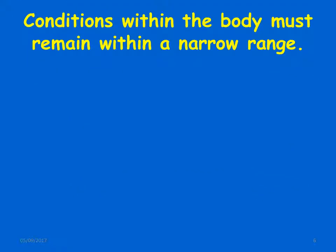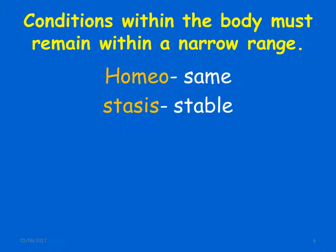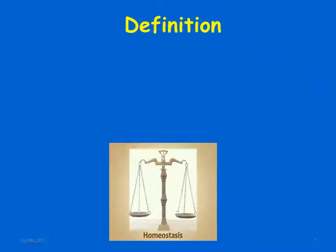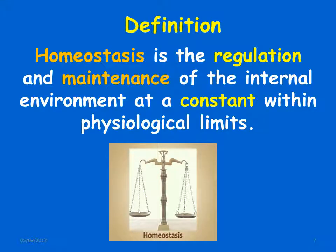Conditions within the body must remain within a narrow range, called the physiological range. 'Homeo' means same and 'stasis' means stable — in other words, homeostasis involves keeping the internal environment within set ranges. Homeostasis is defined as the regulation and maintenance of the internal environment at a constant, within physiological limits.